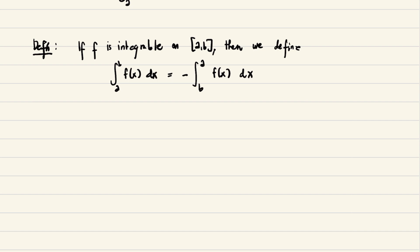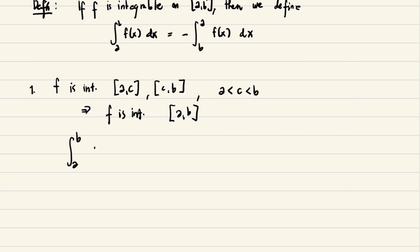We will discuss some properties before we tackle examples. First property says that if f is integrable on the closed intervals [a,c] and [c,b], where c is between a and b, then f is integrable on the closed interval [a,b]. And we have the integral of f(x)dx from a to b can be written as the integral of f(x)dx from a to c plus the integral of f(x)dx from c to b.